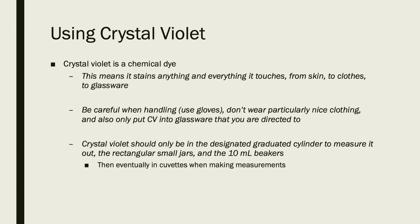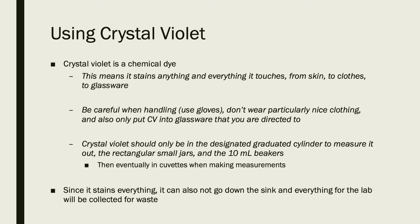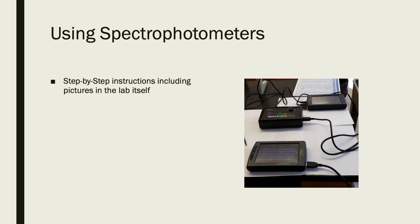We like to keep reusing cuvettes along with all the other pieces of glass for each section. When you're done with everything at the end of the lab, make sure everything gets back to its starting place in the hood so we can reuse it all for the next section. None of the crystal violet can go down the sink — it stains literally everything — so we need to collect it all into the waste container so it can be disposed of properly.